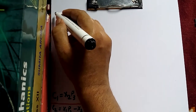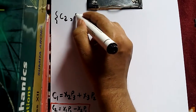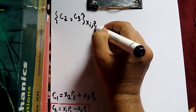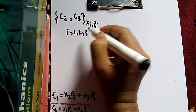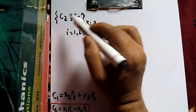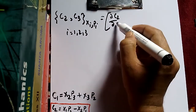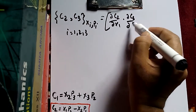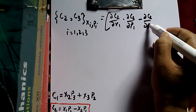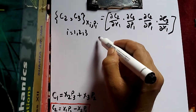Now in our problem we have been asked to find the Poisson bracket of C2, C3 with respect to x_i, p_i where i equals 1, 2, 3. Since C2 and C3 are functions of position and momenta of higher dimension, this will be: del C2/del x1 dot del C3/del p1 minus del C2/del p1 dot del C3/del x1 plus...